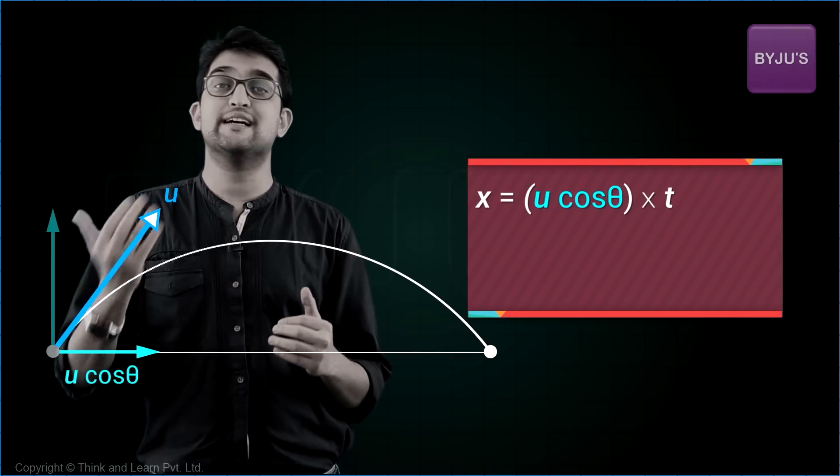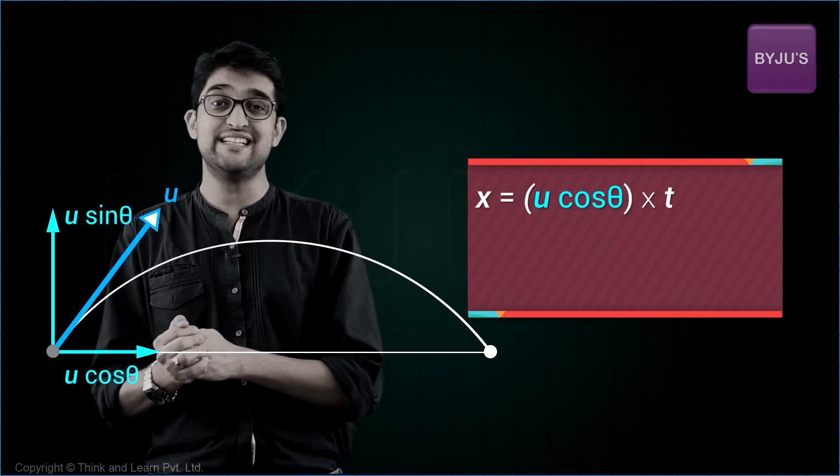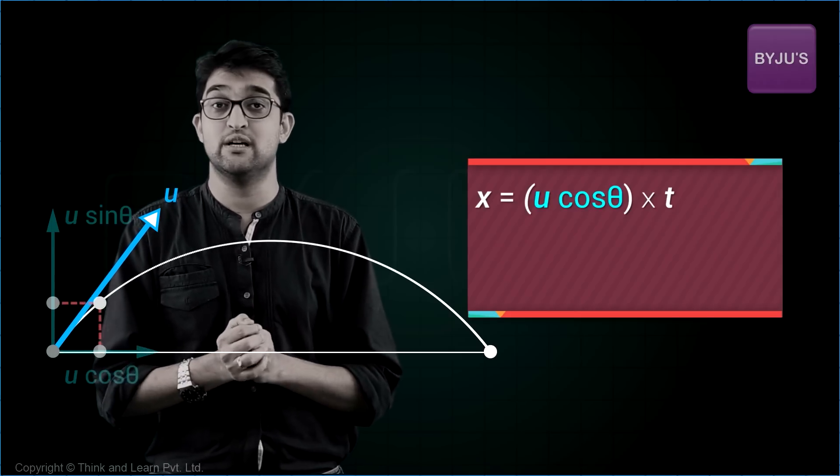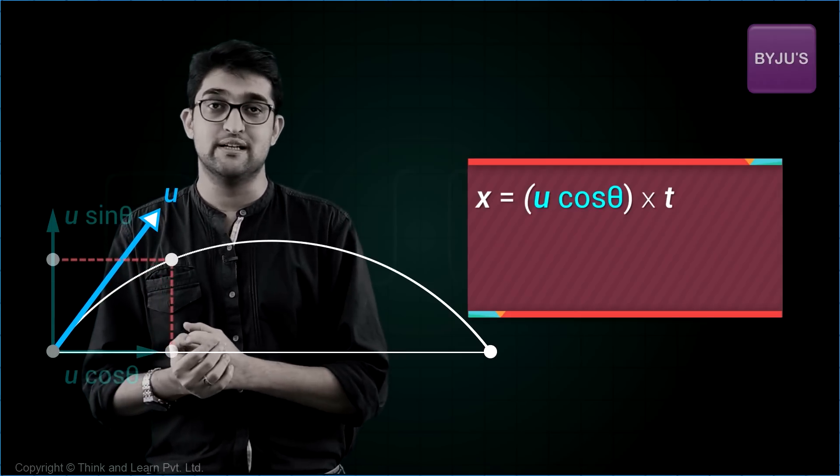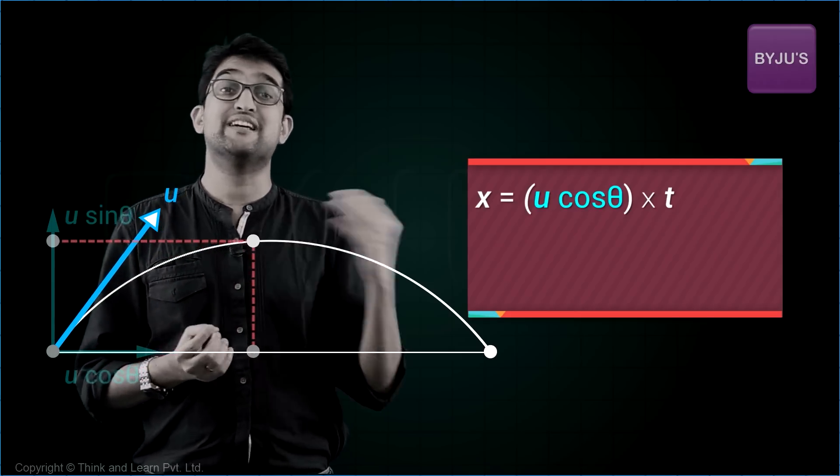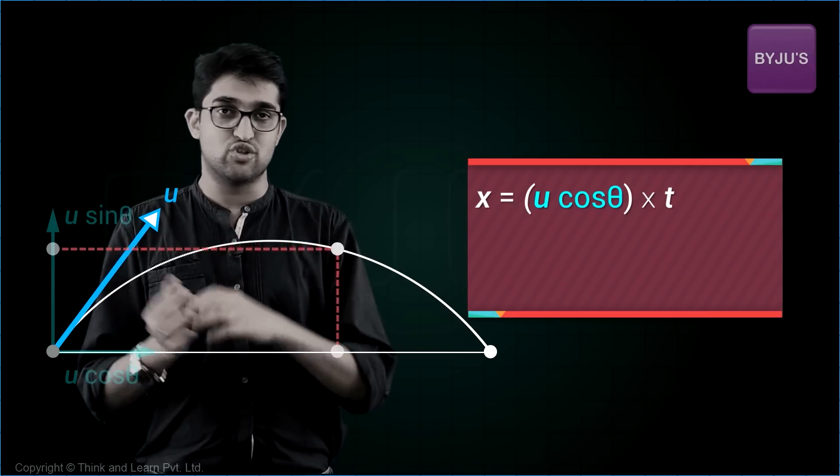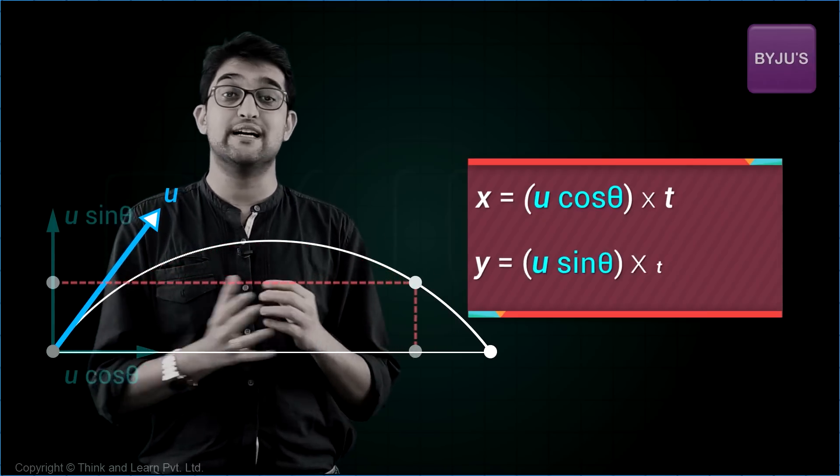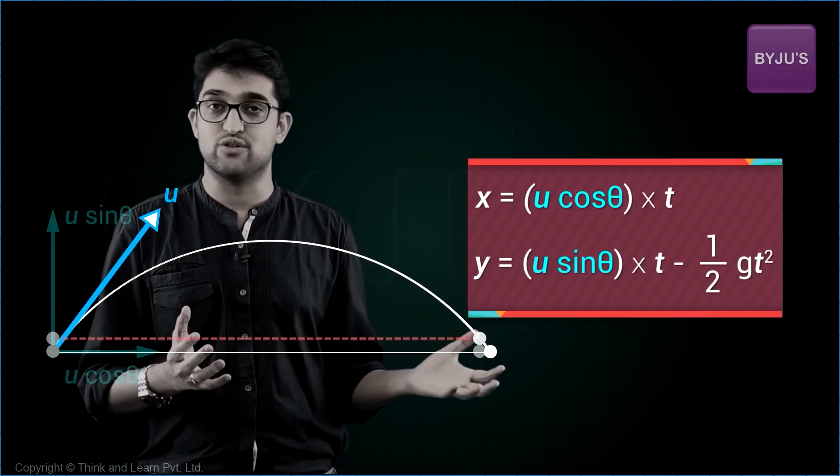What happens in the vertical direction? Initial velocity is u sine theta. Initially, it is a decelerated motion, because gravity reduces the speed. Once it reaches maximum height, it becomes an accelerated motion. So the expression will be u sine theta t minus half gt square. That's it.